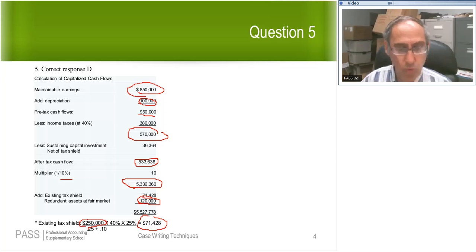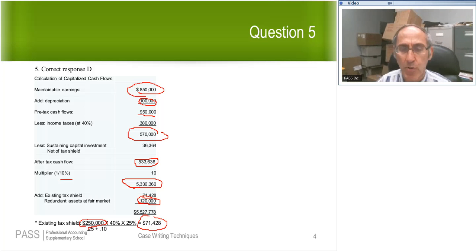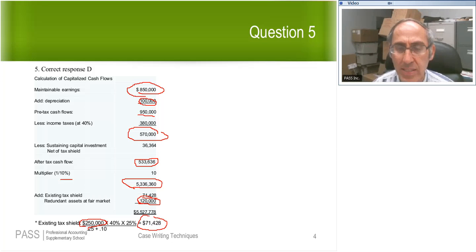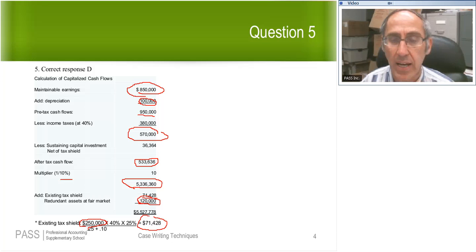The last step is to add the redundant asset. You were given both the book value and the fair value of the redundant asset. The book value is a red herring, completely irrelevant. You always add the market value of the redundant asset, which was 120. So the core value, the value of the core operations, 5,336,360. I add the tax shield, 71,428, plus the fair value of the redundant assets, 120. I get the final value of the business, 5,527,778. Any questions on question number five? Any answer for question number six? Yes, we have a question before we go on to question six. Paul asks, would you please be able to re-explain why we use 50K for the tax shield?